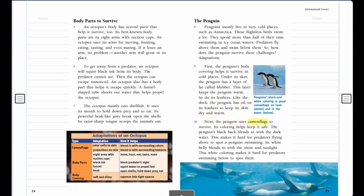Next, the penguin uses camouflage to survive. Its coloring helps keep it safe. The penguin's black back blends in with the dark water. This makes it hard for predators flying above to spot a penguin swimming. Its white belly blends in with the snow and sunlight. This white coloring makes it hard for predators swimming below to spot them.